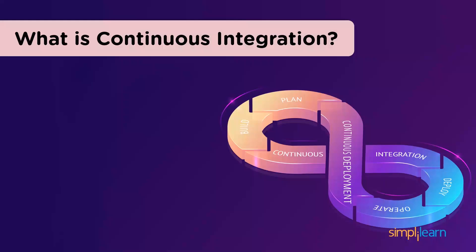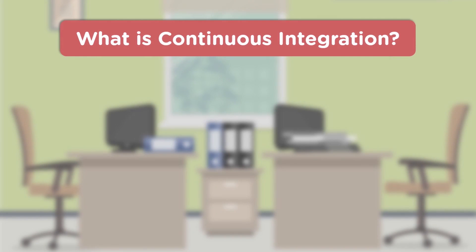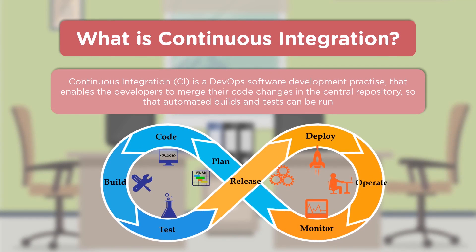Continuous integration — covering build, test, and merge — is a development process used by most teams today. It enables developers to merge changes from their local systems to a central repository, where CI tools perform build automation and test case automation based on those modifications.